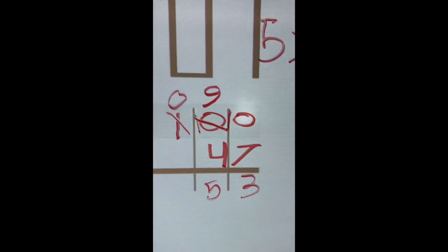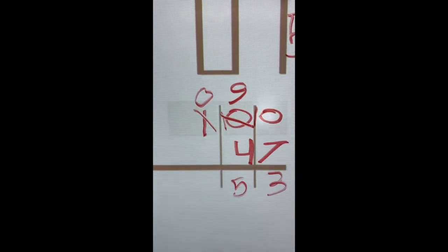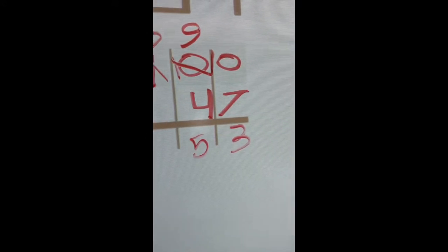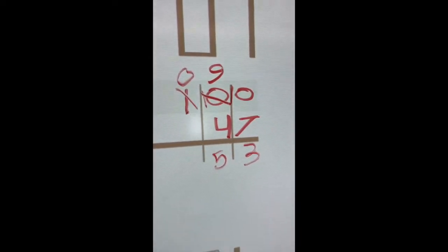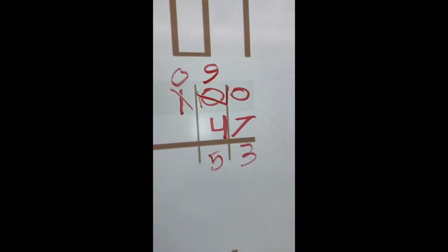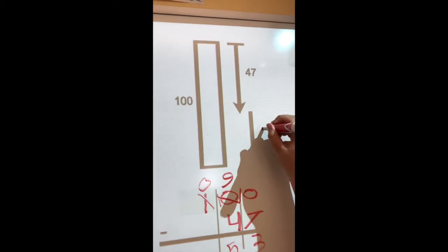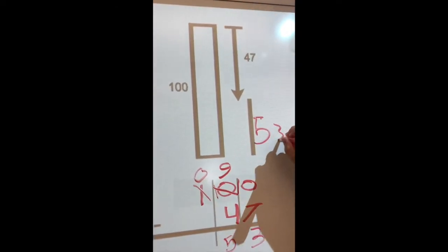Same thing as what you had here, right? 9, take away 4. Good. Okay, so 100 minus 47 is? 53. Okay, put that in your diagram. So this would be 53. Nice.